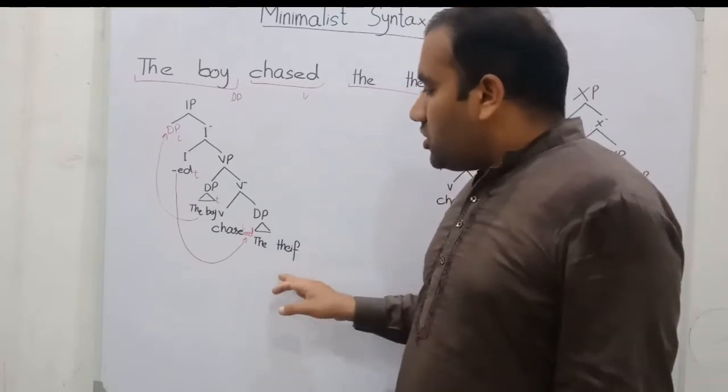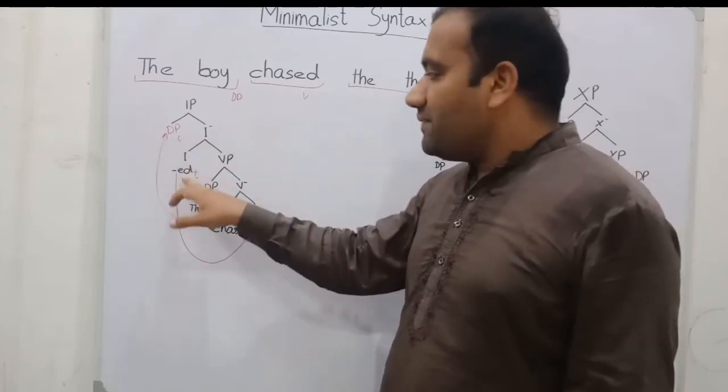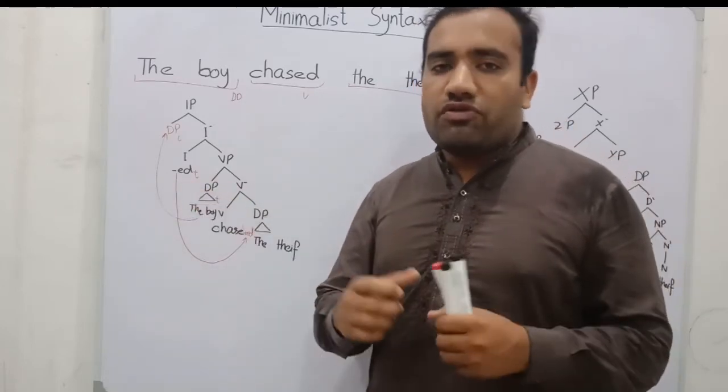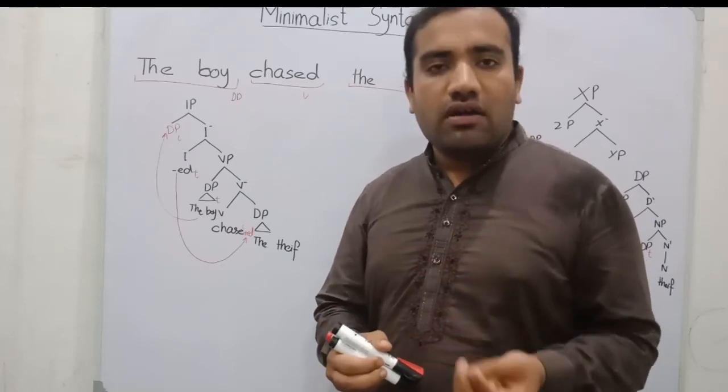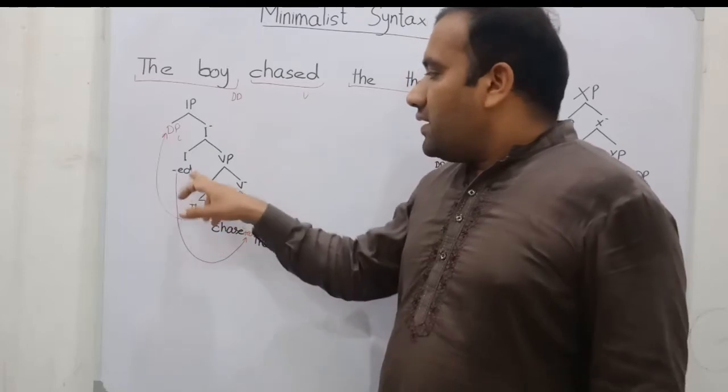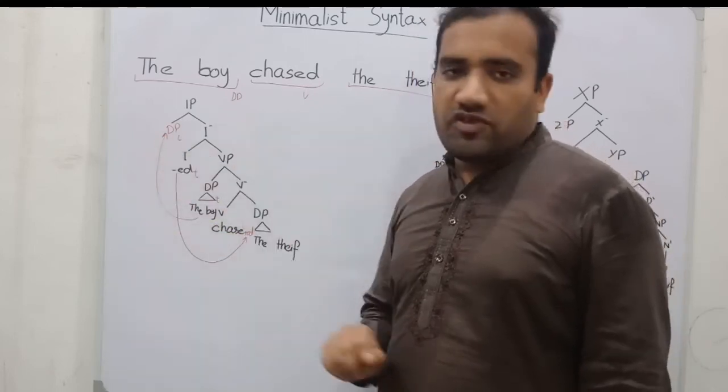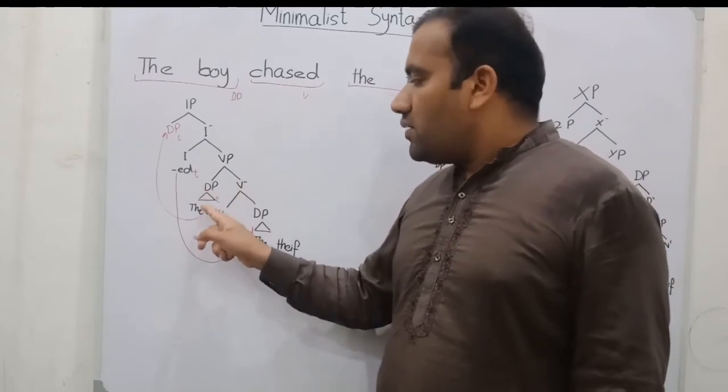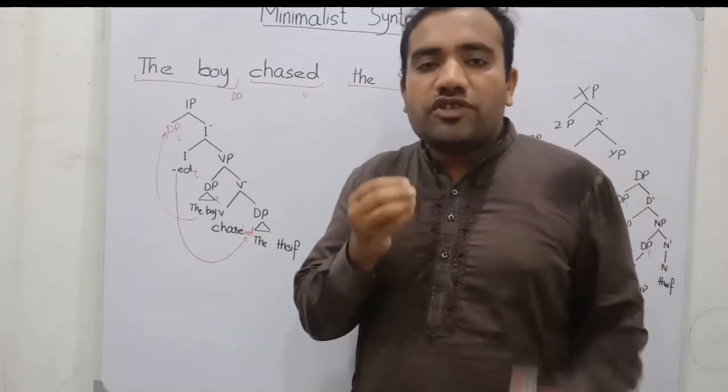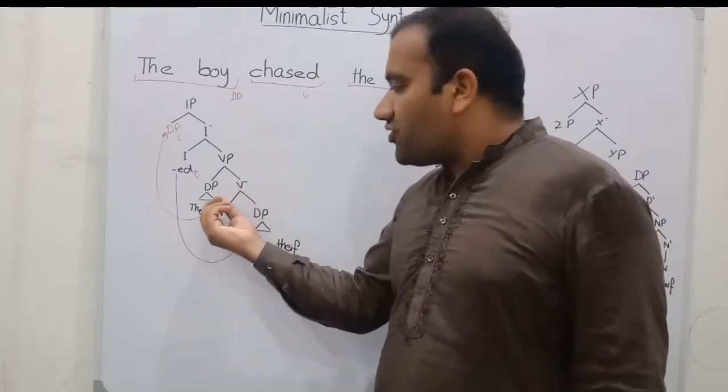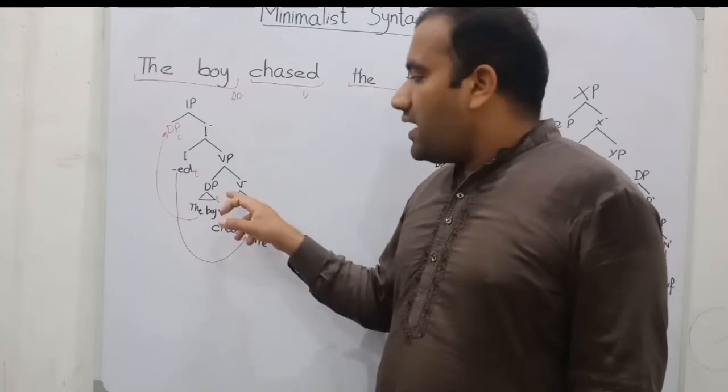So what is the problem? The problem is that these positions are filled, but one position, the specifier IP position, is the empty position. And this ED independently cannot be pronounced, so it must have some lexical category for affix hopping or for attachment. So this IP triggers this DP, the boy, and takes this at its specifier position. If this DP moves from this position to that position, we can say there's an empty position. No, this is not an empty position. This is the trace, because the basic placement of the boy is this position, and this is the final position.